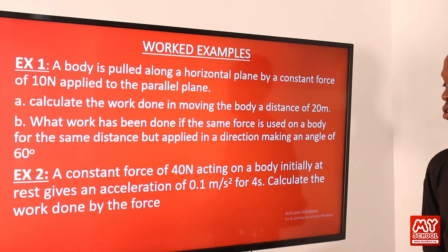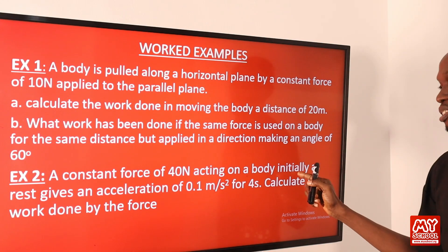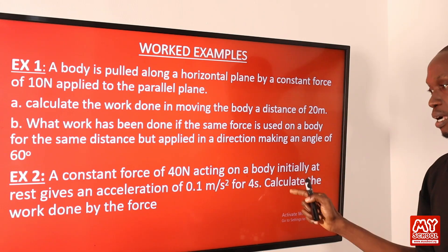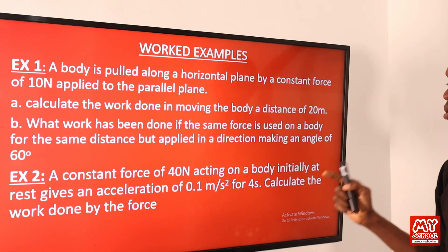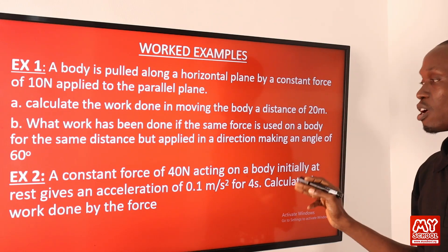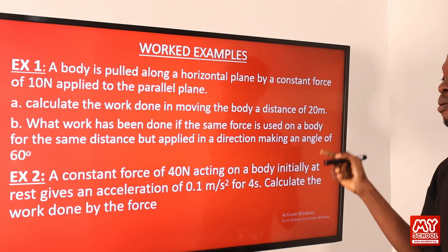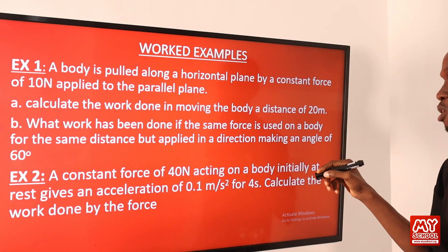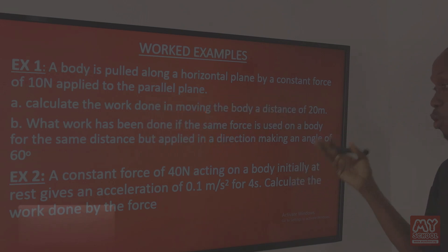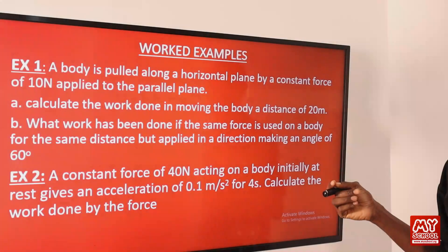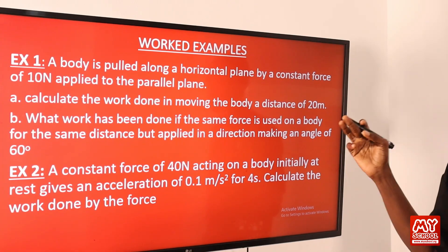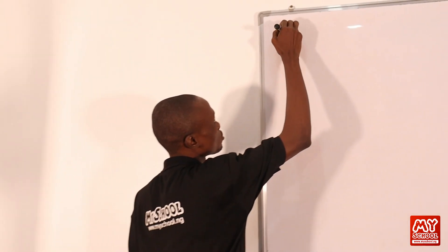Example 2: A constant force of 40 newtons acts on a body initially at rest, giving it an acceleration of 0.1 m/s² for 4 seconds. Calculate the work done by the force. Notice that distance is not directly given, but we can use the given information to calculate distance first before finding work done.